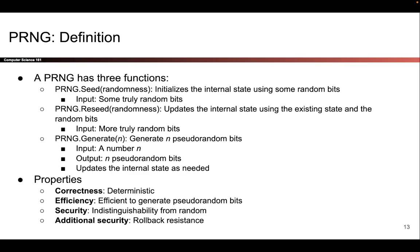Later, if you have more true randomness to feed in, you can call the reseed method, which takes in some true randomness and updates the internal state to incorporate those random bits. The final method is generate: you pass in a number n saying you want n bits of pseudo-random output, and the PRNG uses its internal state, possibly updating those internal variables as needed, to generate n pseudo-random bits cheaply and efficiently in software.